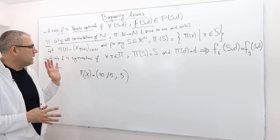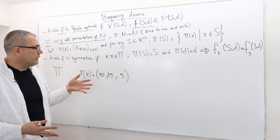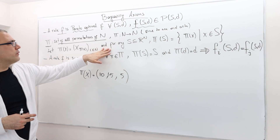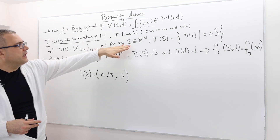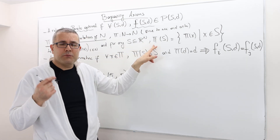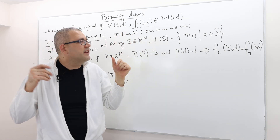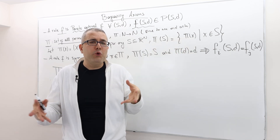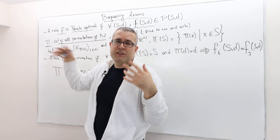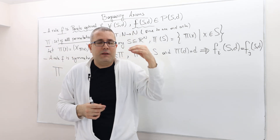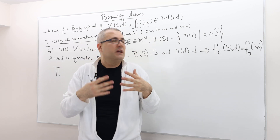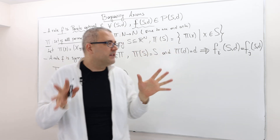If you change the permutation, you are going to get another permuted vector. Then the next thing I'm going to define is: for any subset S of R^n and for any permutation pi, the permutation of the set S is basically the set of all permuted payoff vectors. So I take a permutation and apply it to every element of S — I basically shuffle all the payoffs in the set S.